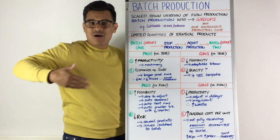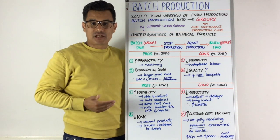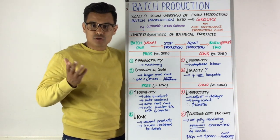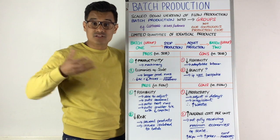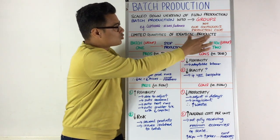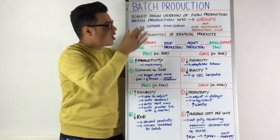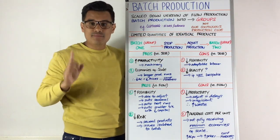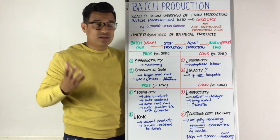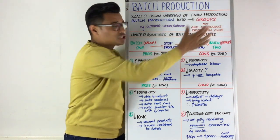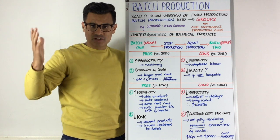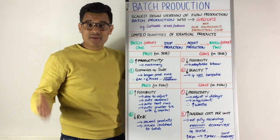That's essentially how batch production works — you're slightly adjusting the machines to make a different set of identical products, but each time in just a limited quantity, as opposed to flow production where you're going to have a large quantity of identical goods.